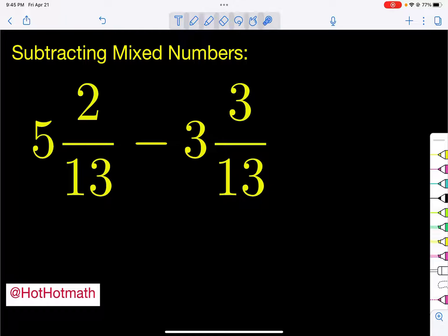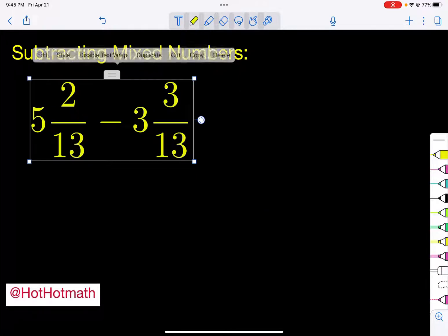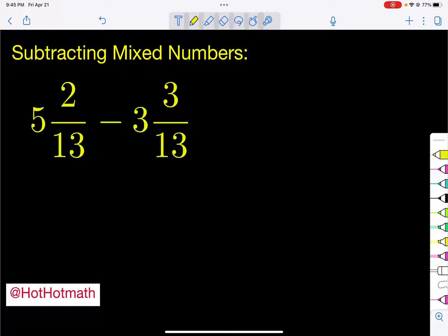When I see mixed numbers like this, the first thing I like to do is write it to the side. So let me get myself some room here. So I'm going to do 5 and 2 thirteenths minus 3 and 3 thirteenths.